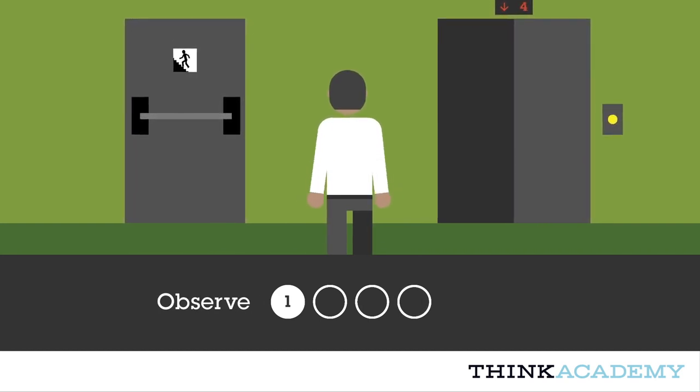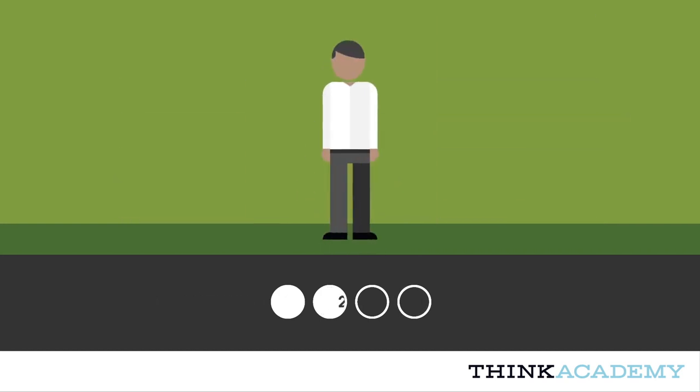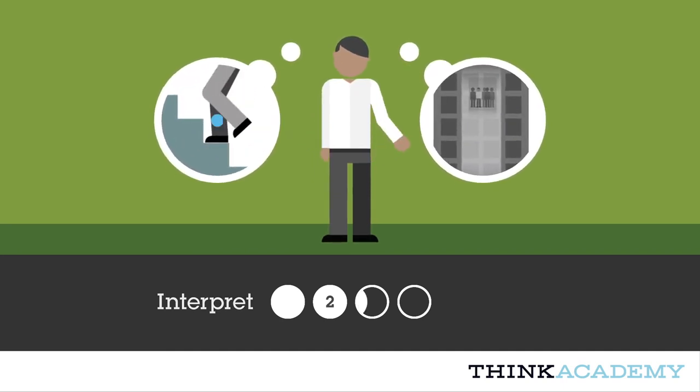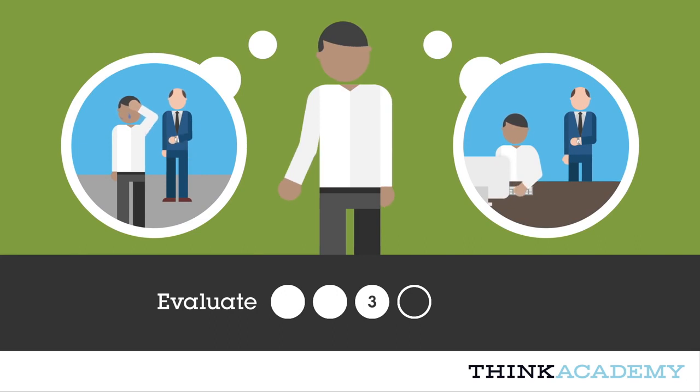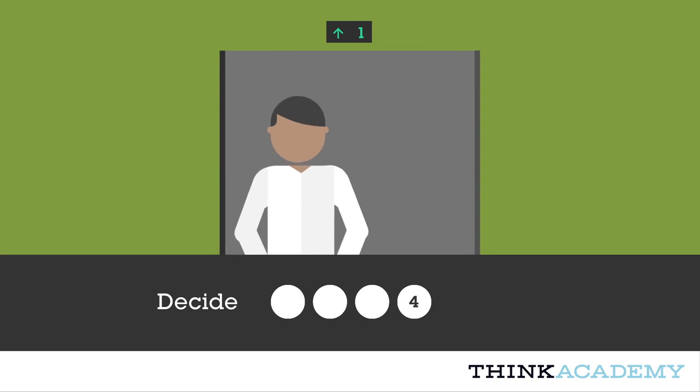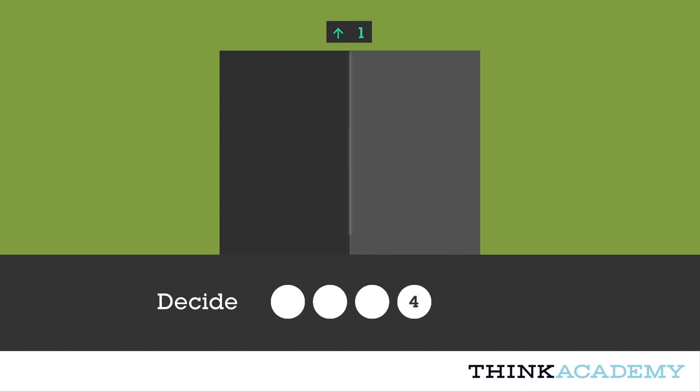First, we observe visible phenomena and bodies of evidence. Second, we draw on what we know to interpret what we're seeing, to generate hypotheses about what it means. Third, we evaluate which hypotheses are right or wrong. Finally, we decide, choosing the option that seems best and acting accordingly.